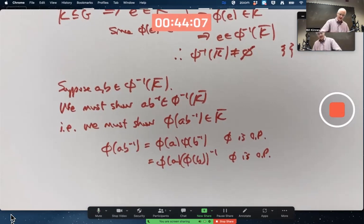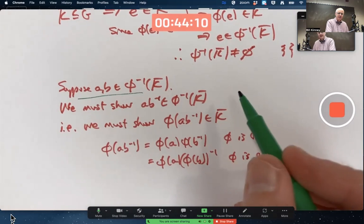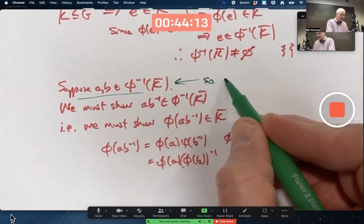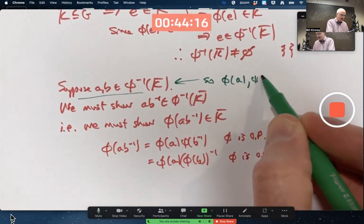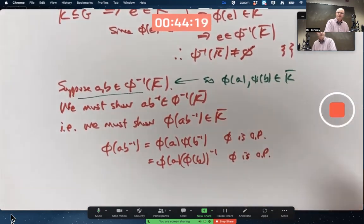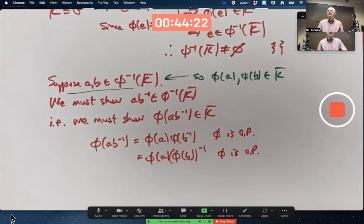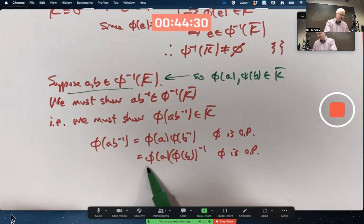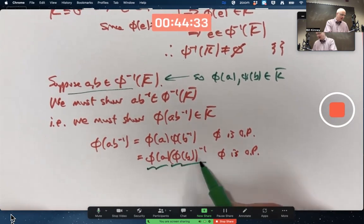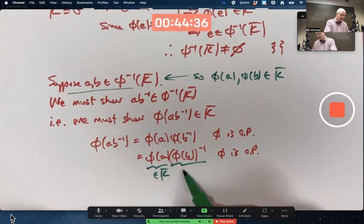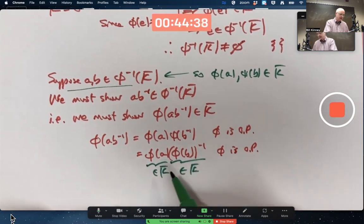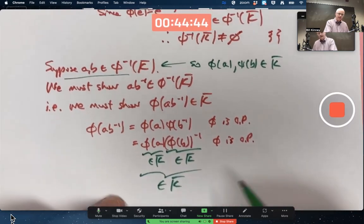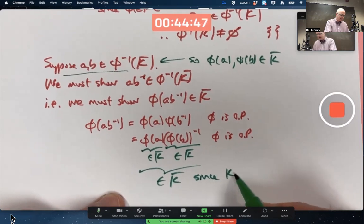And what's the significance of this? Well, remember, A and B are assumed to be in the preimage. So, φ of A and φ of B are in K bar. K bar is a subgroup of G bar, so it's closed under multiplication and inverses. These are two elements of K bar. K bar is closed under taking inverses and multiplication. This entire thing is in K bar. Since K bar is a subgroup of G bar. And that does it.